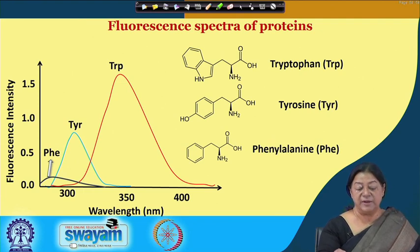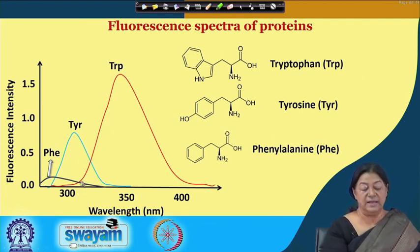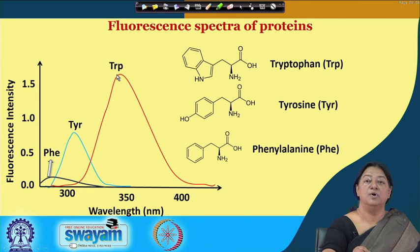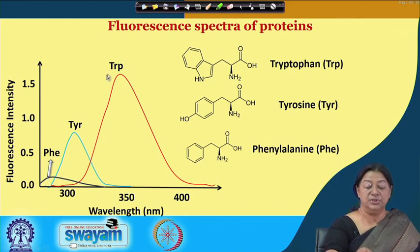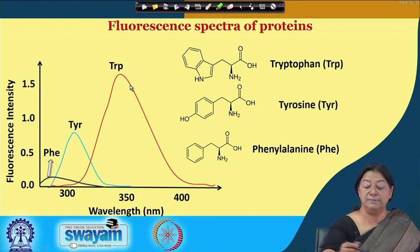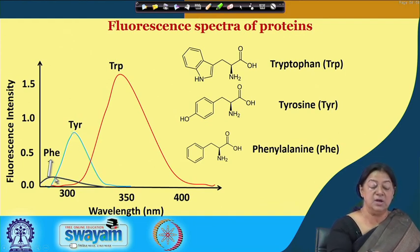Looking at the fluorescence spectra of proteins, we can see the phenylalanine fluorescence intensity, the tyrosine fluorescence intensity, and the tryptophan fluorescence intensity. Tryptophan accounts for the highest quantum yield, meaning a larger number of photons are emitted per photon absorbed compared to tyrosine and phenylalanine. The tryptophan intensity maximum and the tyrosine intensity maximum can both be identified, while phenylalanine is relatively weak due to its low quantum yield.